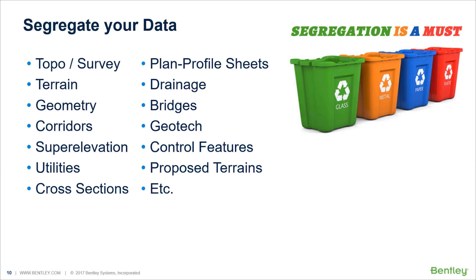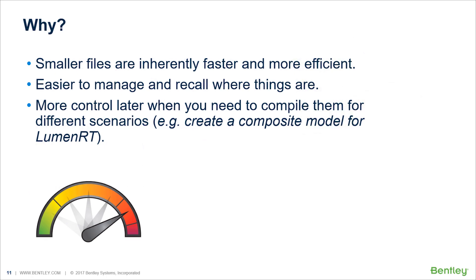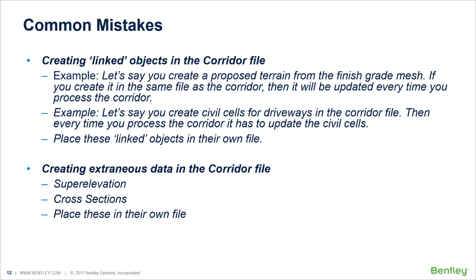Now let's talk about data segregation. It can come in many shapes and forms. Common topics include topo and survey/terrain, geometry, corridor, superelevation, utilities, cross sections, sheets — planner, profile, cross section — drainage, bridges, geotech, and more. Segregation is a must. Smaller files are inherently faster and more efficient, easier to manage, and provide more control when you need to create composite models for scenarios such as Luminary.